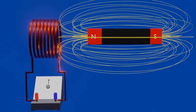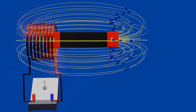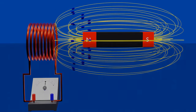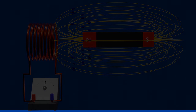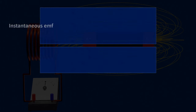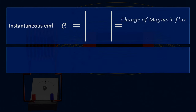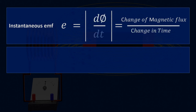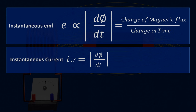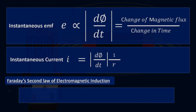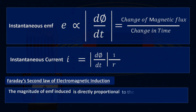If we repeat the first experiment but this time move the magnet more rapidly, it induces EMF and then current of higher magnitude within the coil, which can be seen by the needle of the galvanometer. The magnitude of instantaneous EMF induced E is equal to the change of magnetic flux dΦ over change in time dt. Or we can say that the magnitude of EMF induced is directly proportional to the rate of change in magnetic flux. This is Faraday's second law of electromagnetic induction.